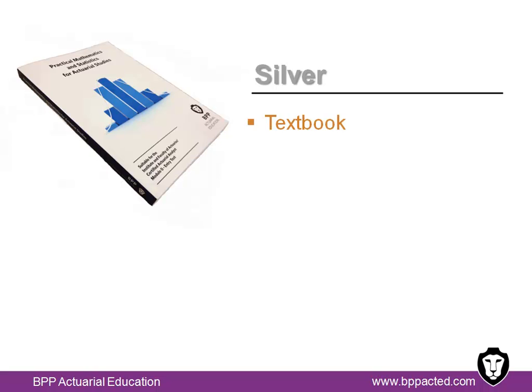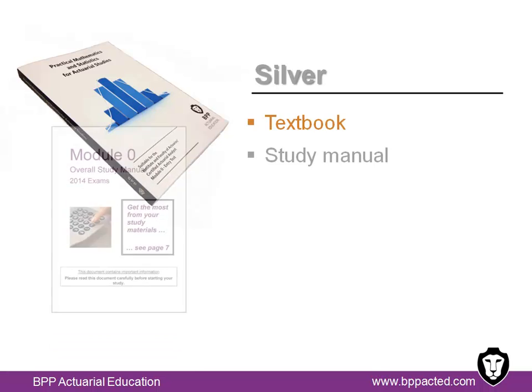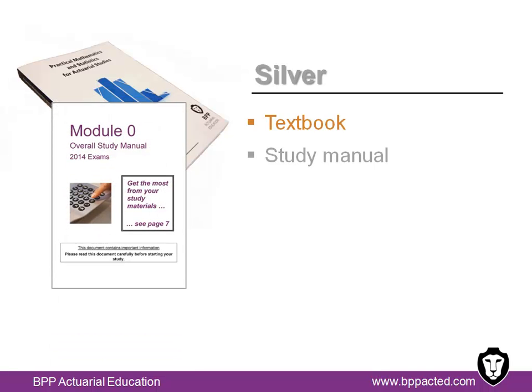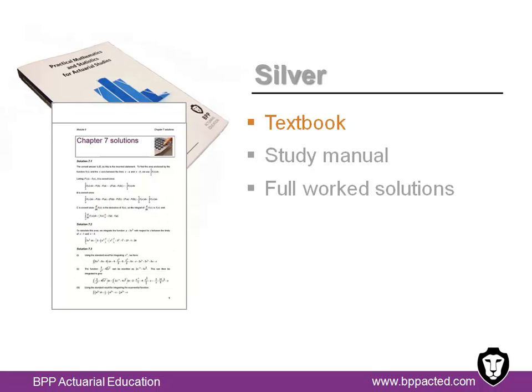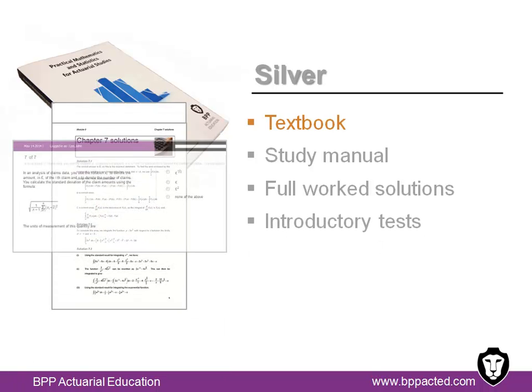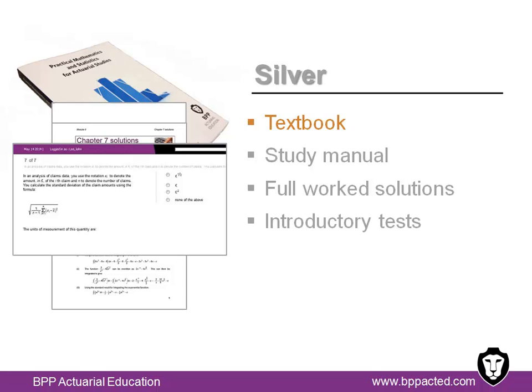The silver package builds on this by adding a range of additional self-study resources. An online study manual, which gives a step-by-step guide to studying each chapter of the textbook, including shortcuts to help you study efficiently. Full worked solutions to all the textbook's practice questions. An online multi-choice question introductory test for each chapter, which will help you to focus on the key areas for learning and make the most effective use of your study time.